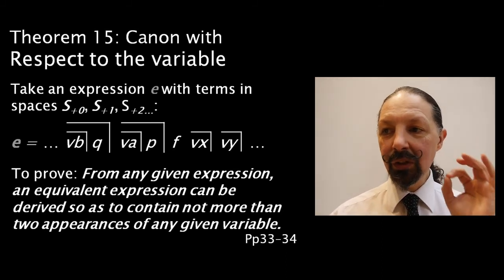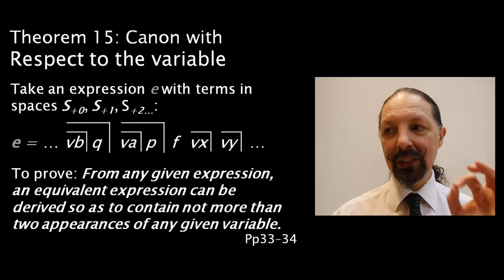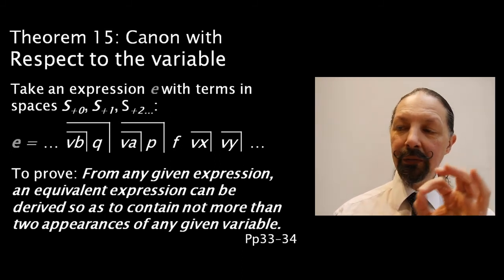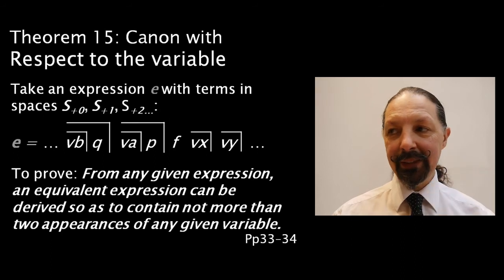What Spencer-Brown is saying is that we need to prove that from any given expression an equivalent expression can be derived that contains not more than two appearances of any given variable. So here we're looking for no more than two V's.